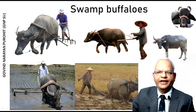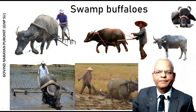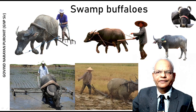The swamp buffalo is the principal work animal in many countries of Southeast Asia and in some parts of India like Assam. The buffalo's name originates from its use in agricultural purposes in swamp and marshy places. You can see here agricultural practices being done using a swamp buffalo. The swamp buffalo is also popularly known as the Karabao in Philippines and Thailand, and these are the principal work animals.